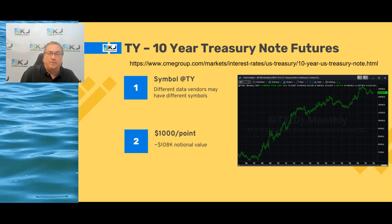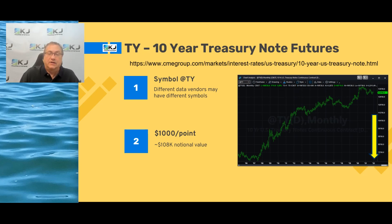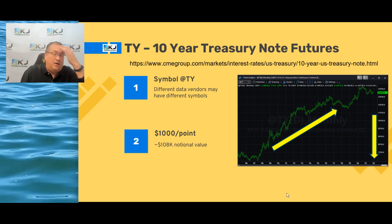The contract is $100,000 per point, so right now if you were to enter into a contract it's around $108,000 or so. Take a look at the chart on the right — it only shows monthly data up to 2022, but you can see from about 2006-2007 to 2022 it was basically all in an uptrend as interest rates fell.